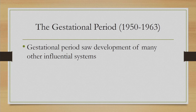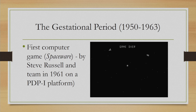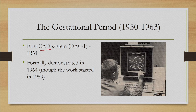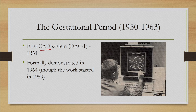Along with SAGE and Sketchpad, the gestational period also saw development of many other influential systems. During this phase, the first computer game called Spacewar was developed in 1961 on a PDP-1 platform, which is an early computing platform. IBM also developed the first CAD or computer-aided design system — these systems are meant for helping engineers create mechanical drawings and test various things without actually requiring building the physical system.